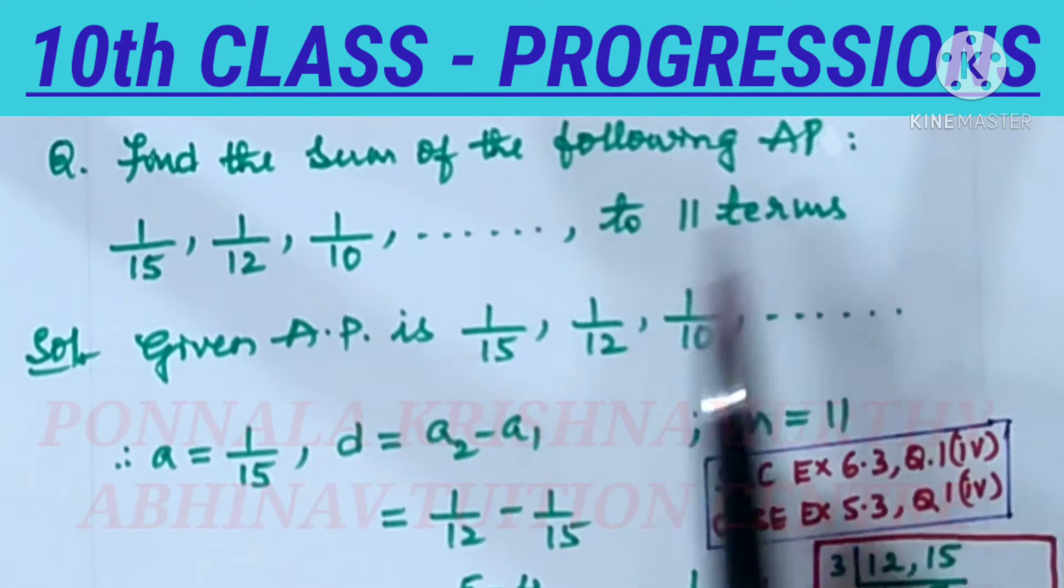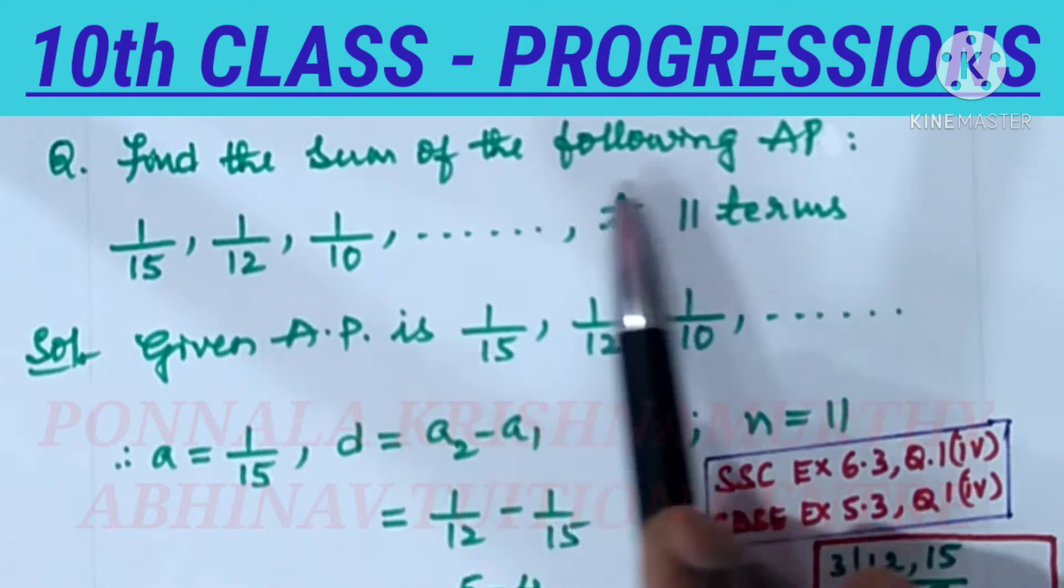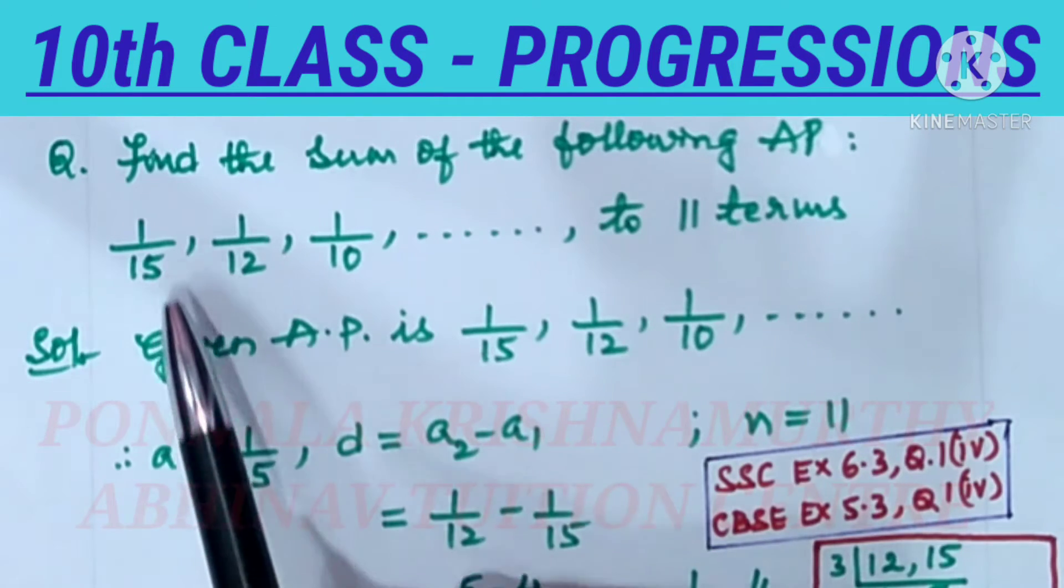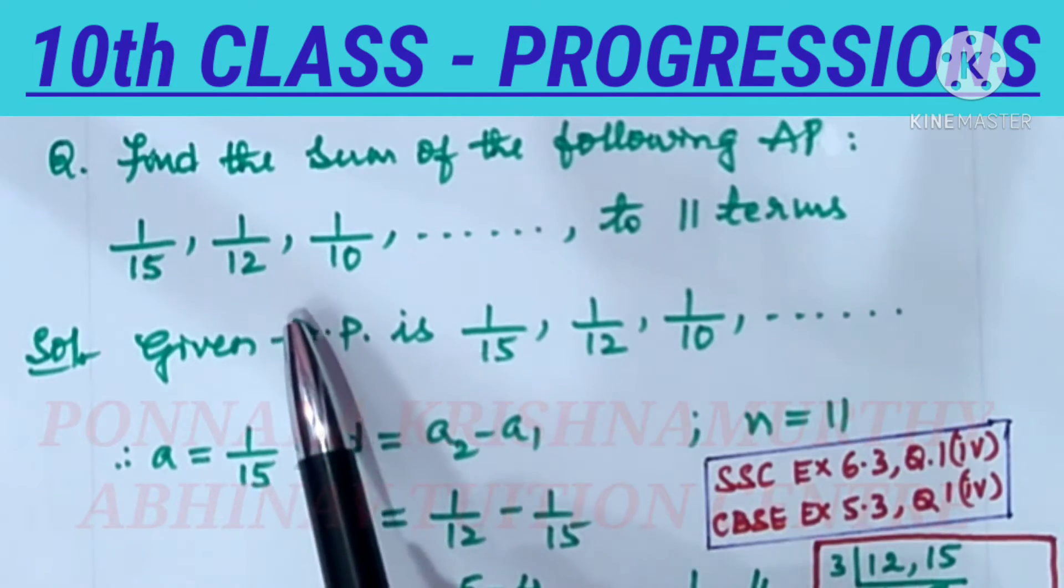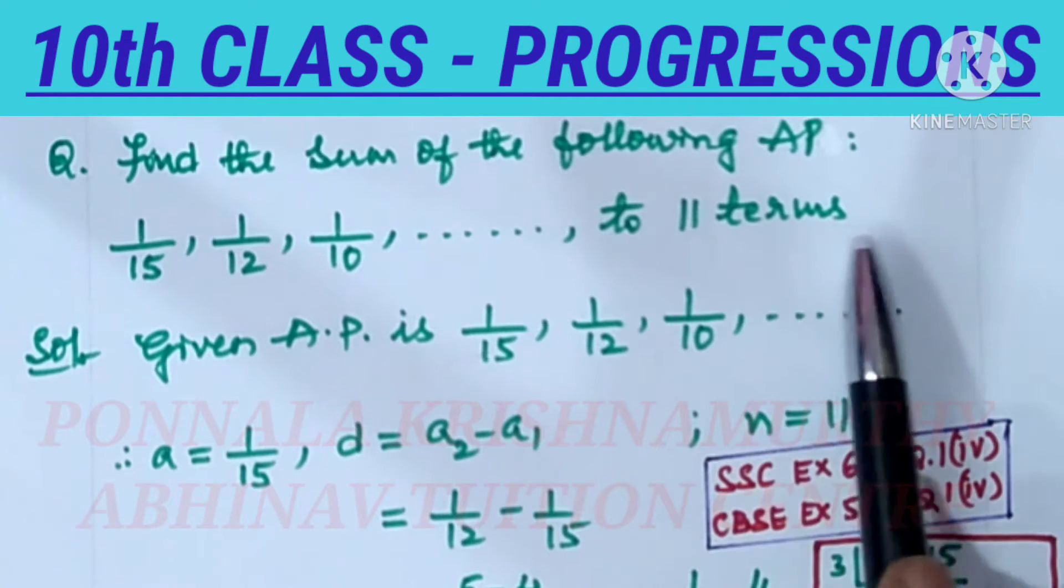10th Class Progressions. Find the sum of the following AP: 1/15, 1/12, 1/10, and so on to 11 terms.